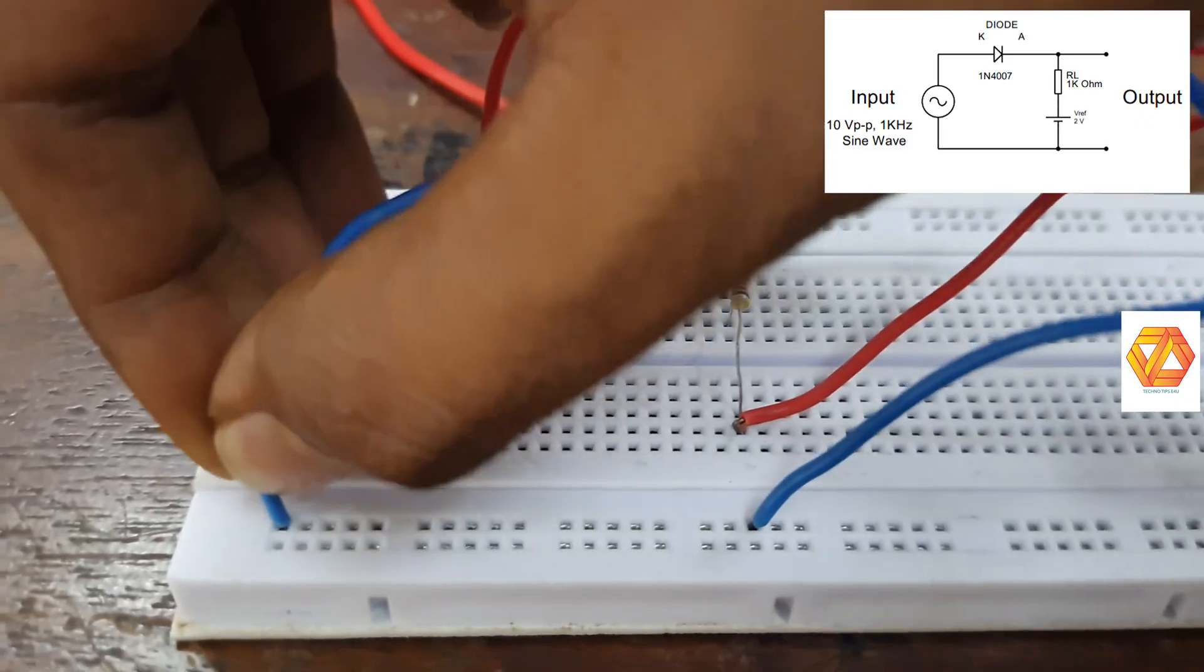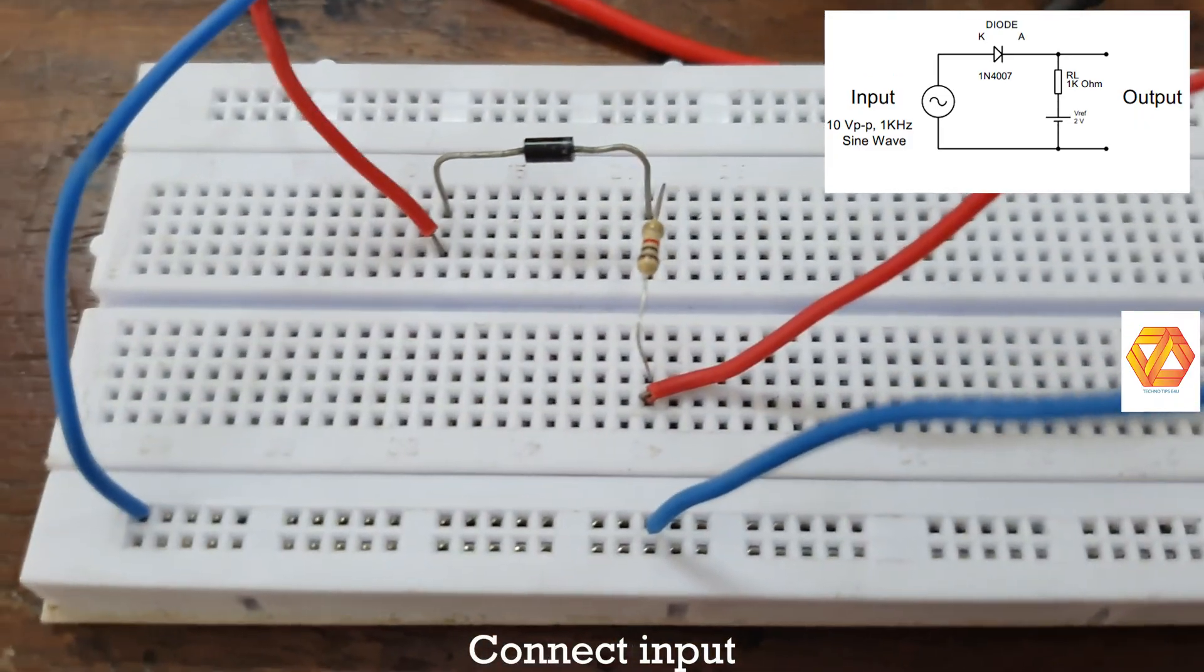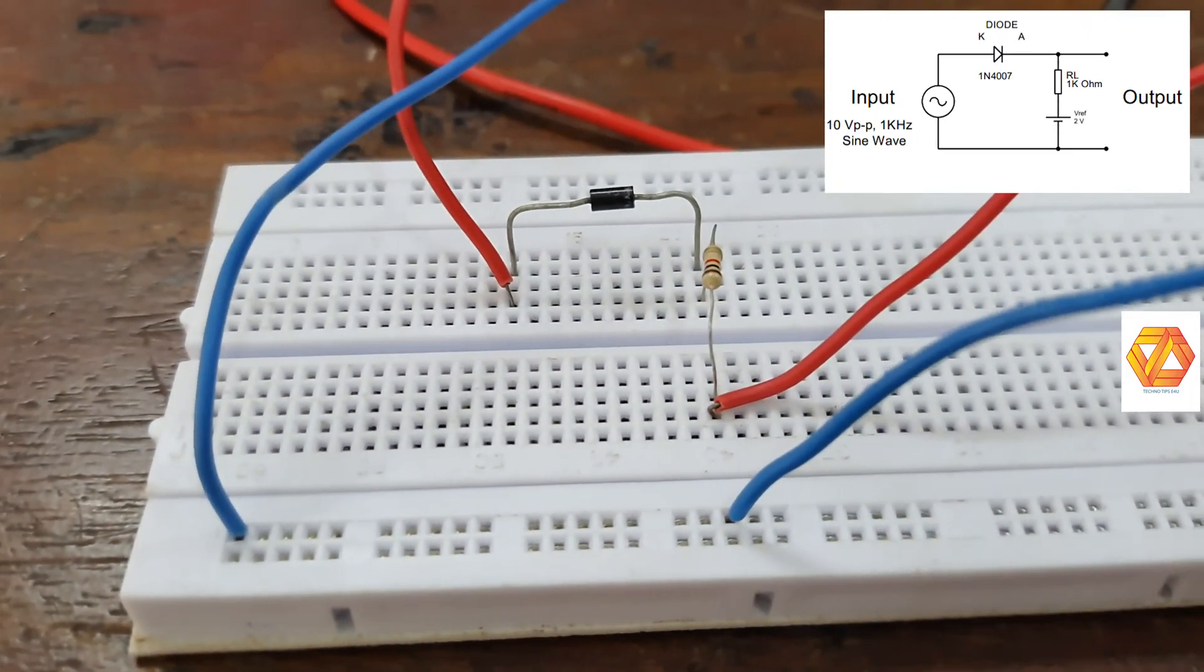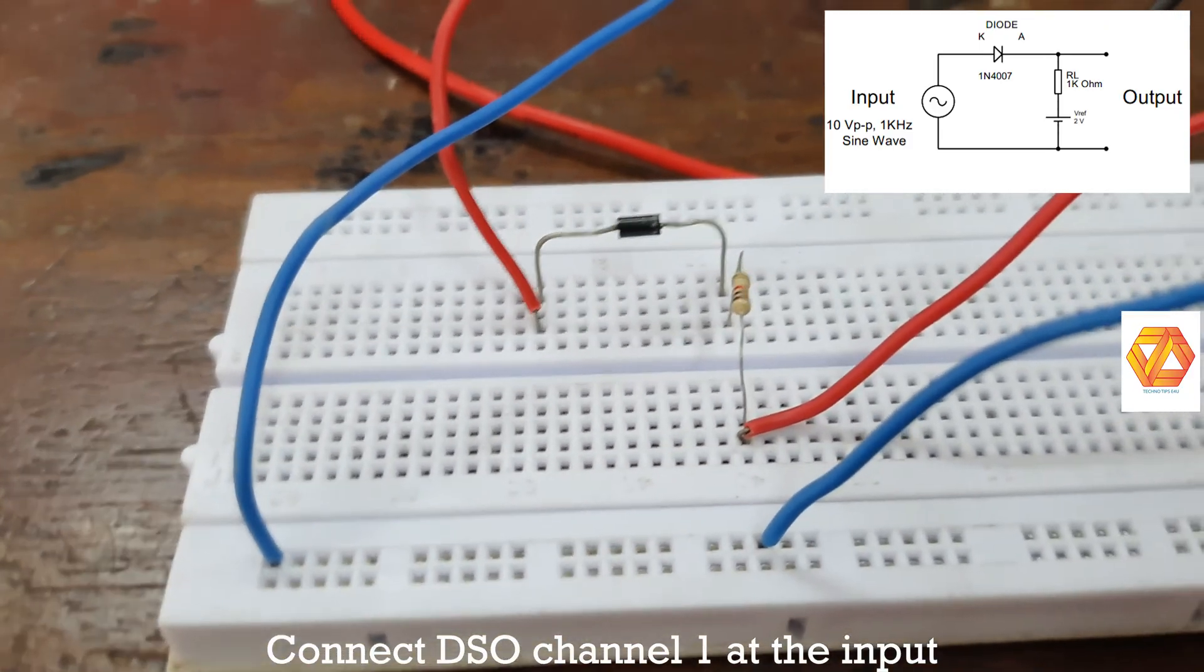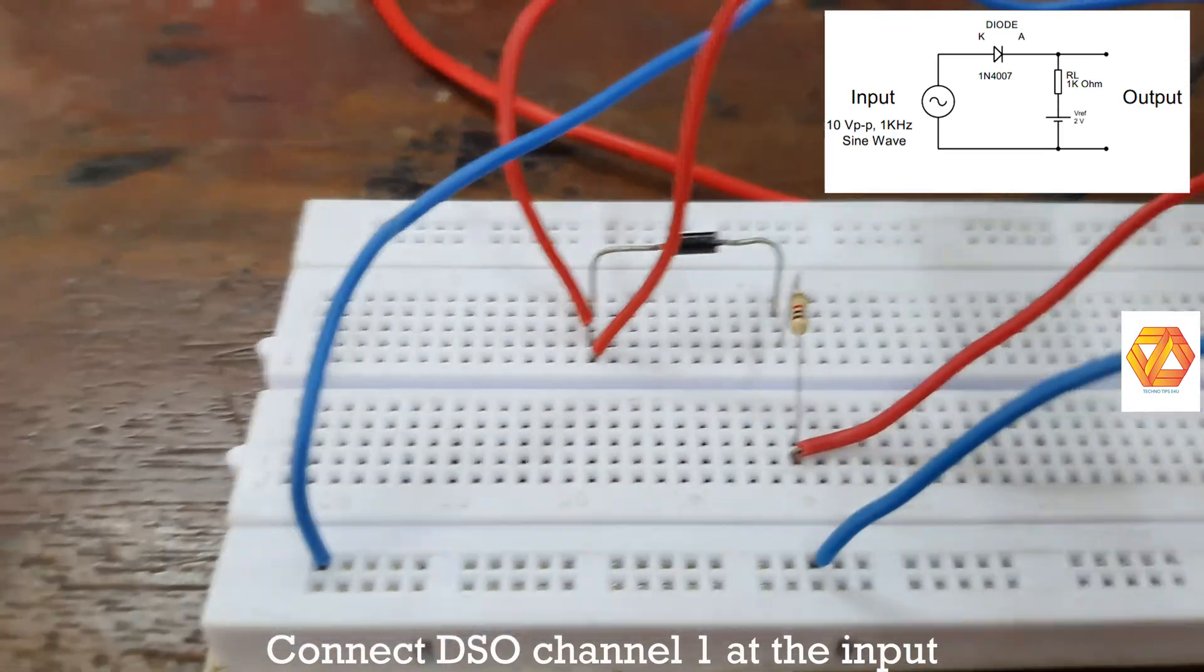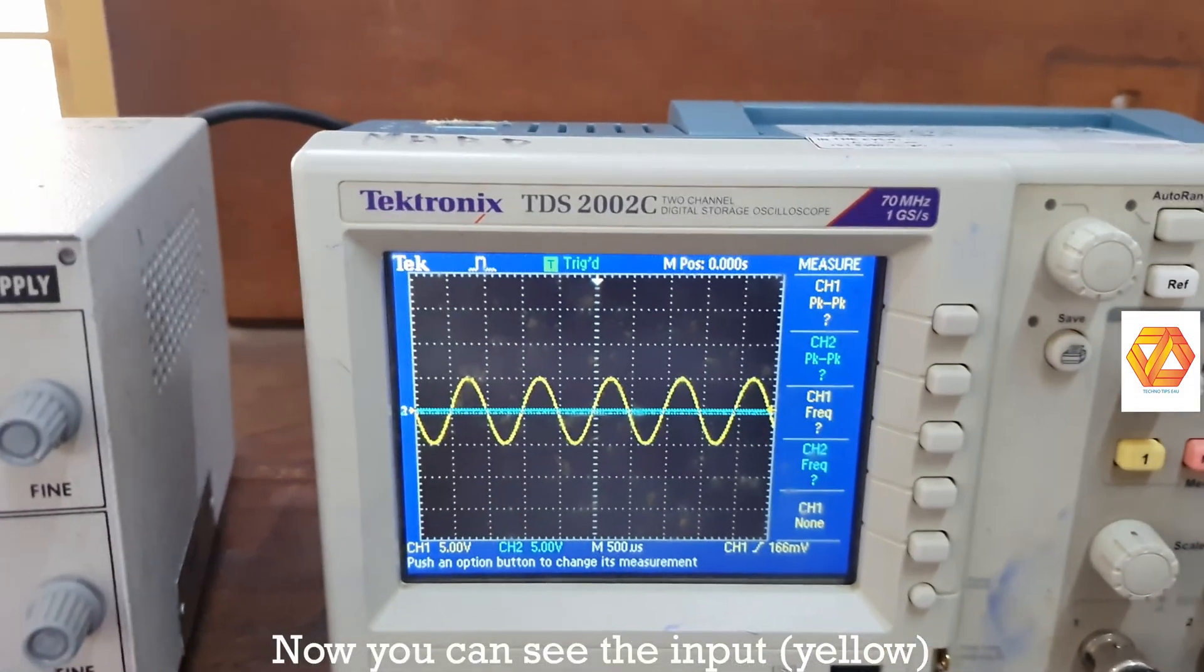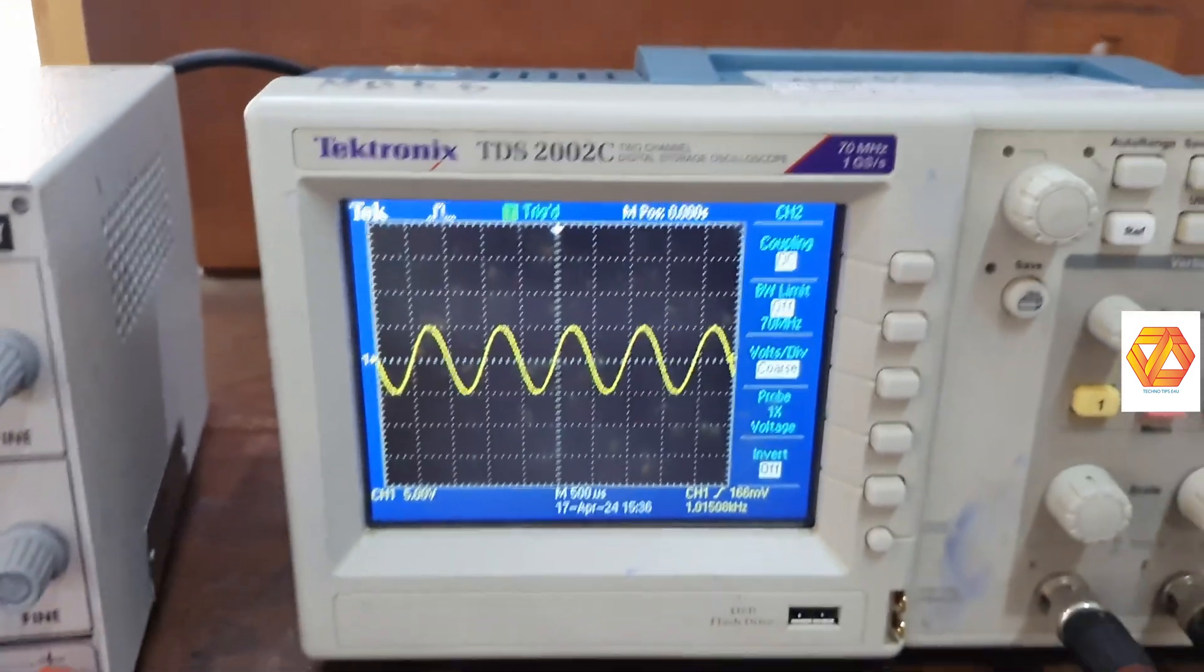In order to see the input on DSO, connect DSO channel 1 to the input. Now connect DSO channel 1. Now you can see on DSO channel 1 input sine wave with 1 kilo hertz frequency and 10 volt peak to peak amplitude.